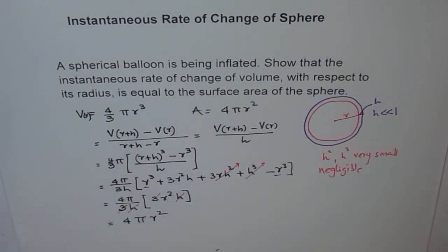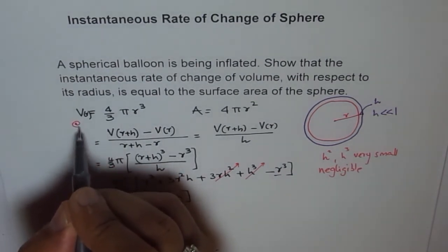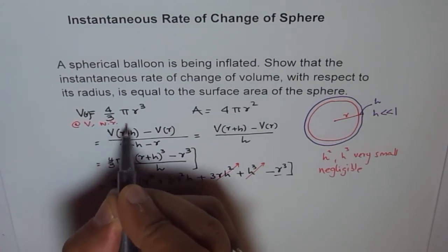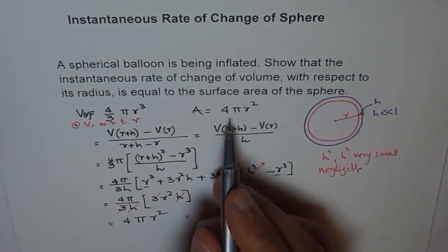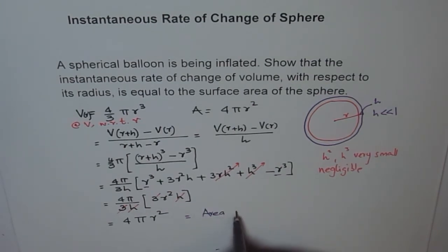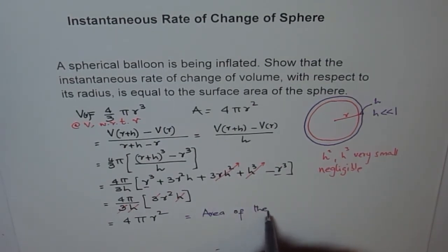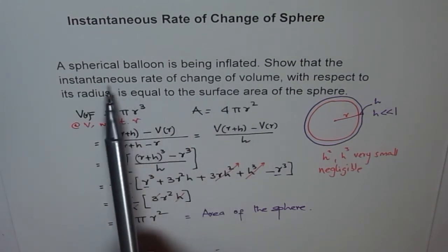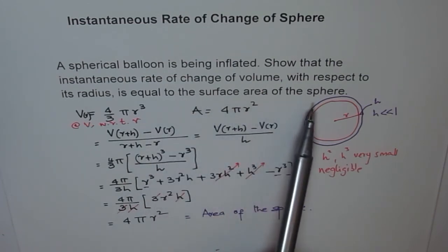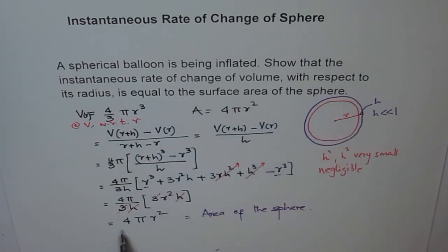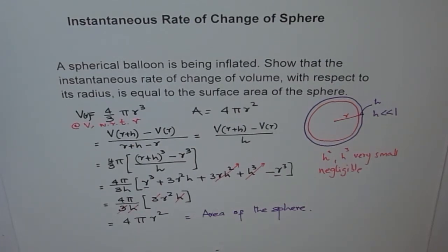So the rate of change of volume — the instantaneous rate of change of volume with respect to radius r — is equal to 4πr², which is the surface area of the sphere. That's a very important conclusion and it has huge applications. It's a very interesting one also.